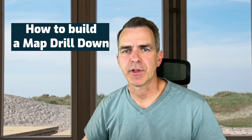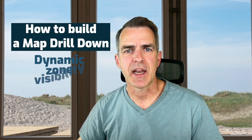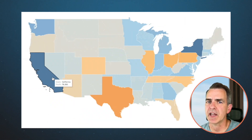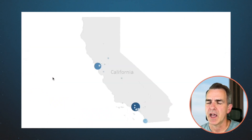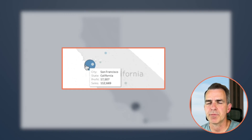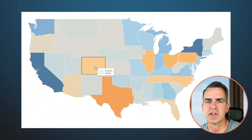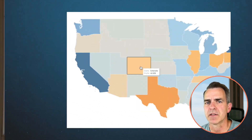Hello everyone and welcome back. Today I'm going to show you how to build a map drill down with dynamic zone visibility. For example, I can click on California and see sales and profit for each postcode within California. Click on a postcode and it goes back to the entire U.S. Let's see how we build it.